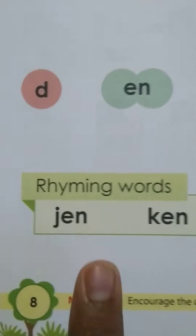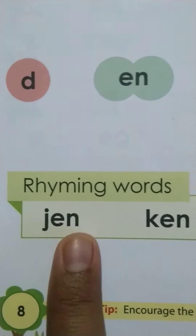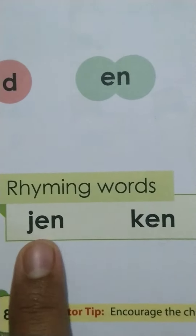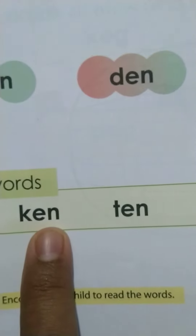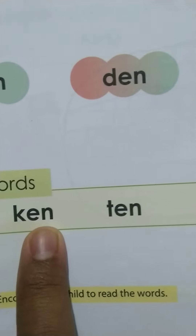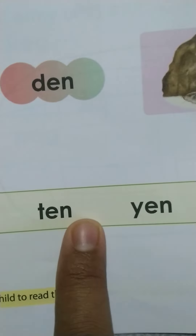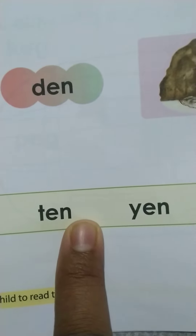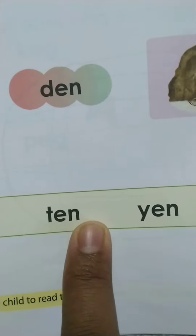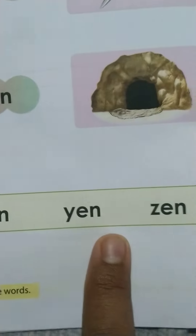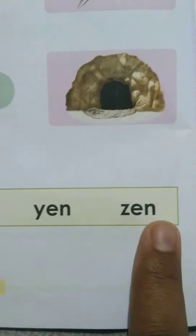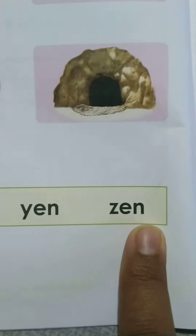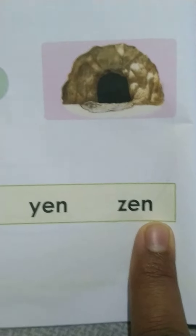Here, some rhyming words are given. D, E, N — den. K, E, N — ken. T, E, N — ten. Y, E, N — yen. Z, E, N — zen.